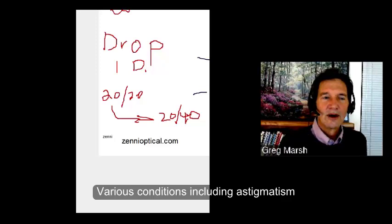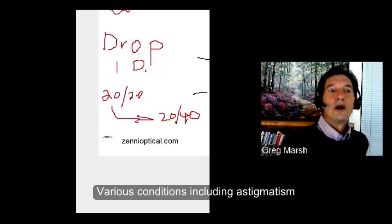Jim? Greg, can you hear me? I can. Is this Jim? Good. Yes, it is. Great. You're talking about reducing the diopters. What about the astigmatism?